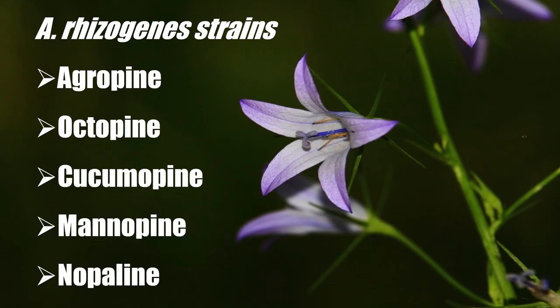Agrobacterium strains are of five types depending upon the type of opine produced: agropine, actopine, cucumopine, manopine, and napoline. Among these, agropine strains are the most commonly used as they have the strongest induction ability.